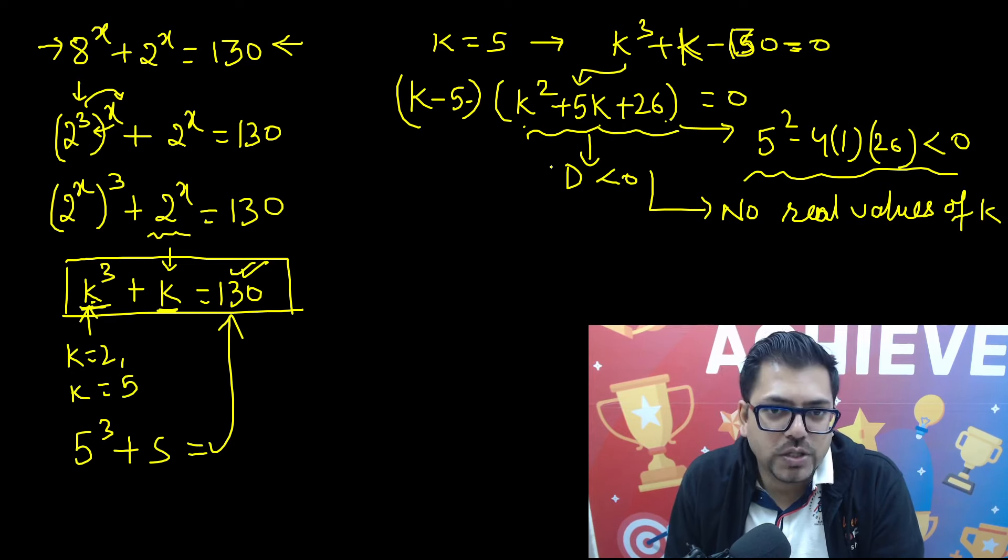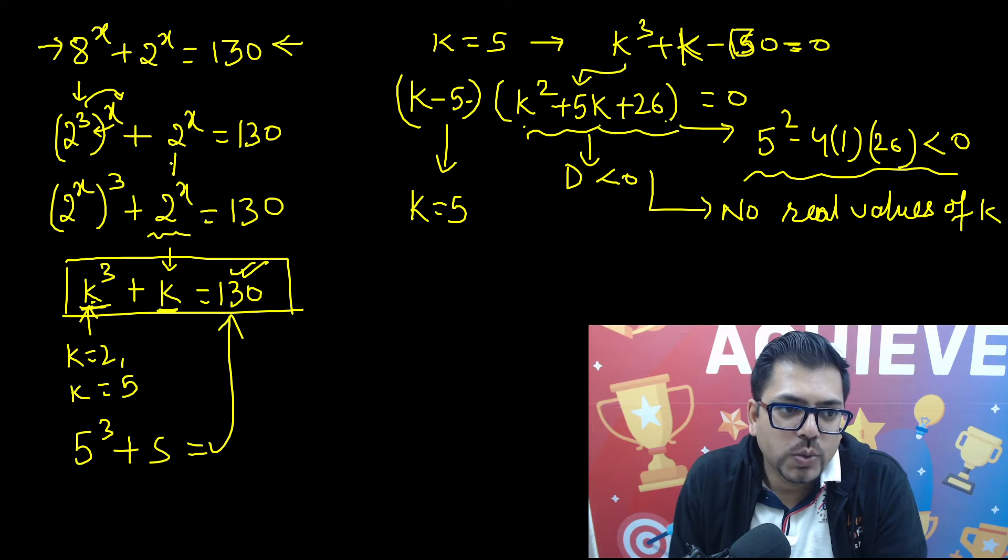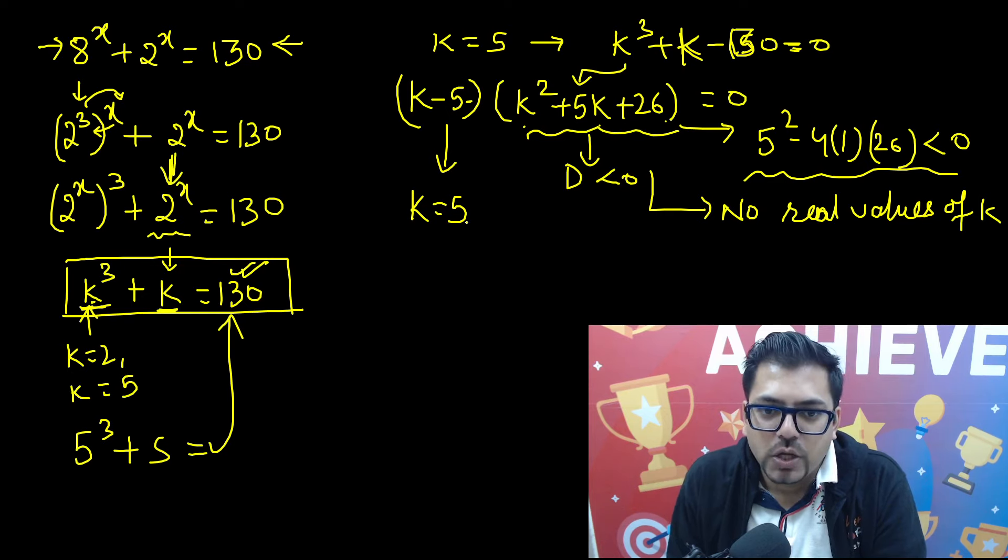Once we have got k equals 5, k we had assumed as 2 raised to power x. So 5 equals 2 raised to power x.